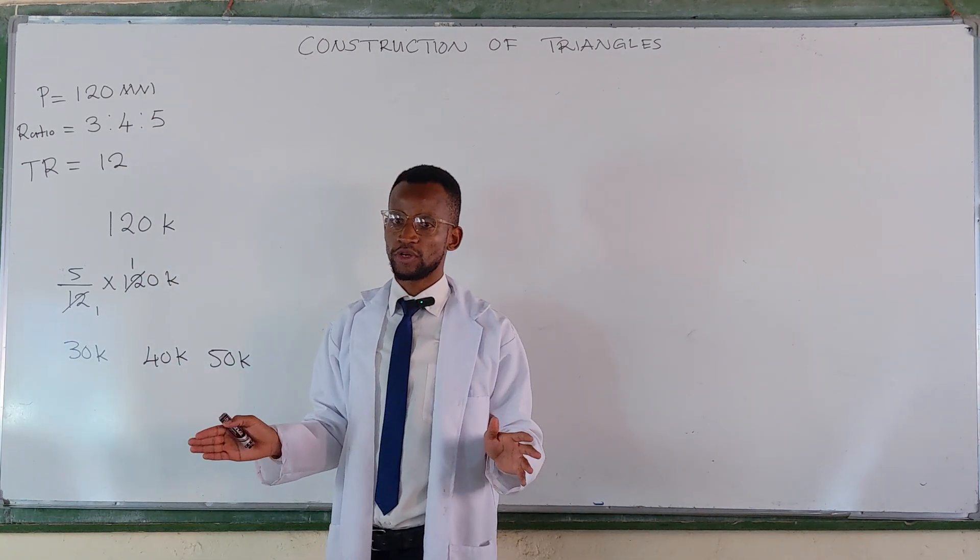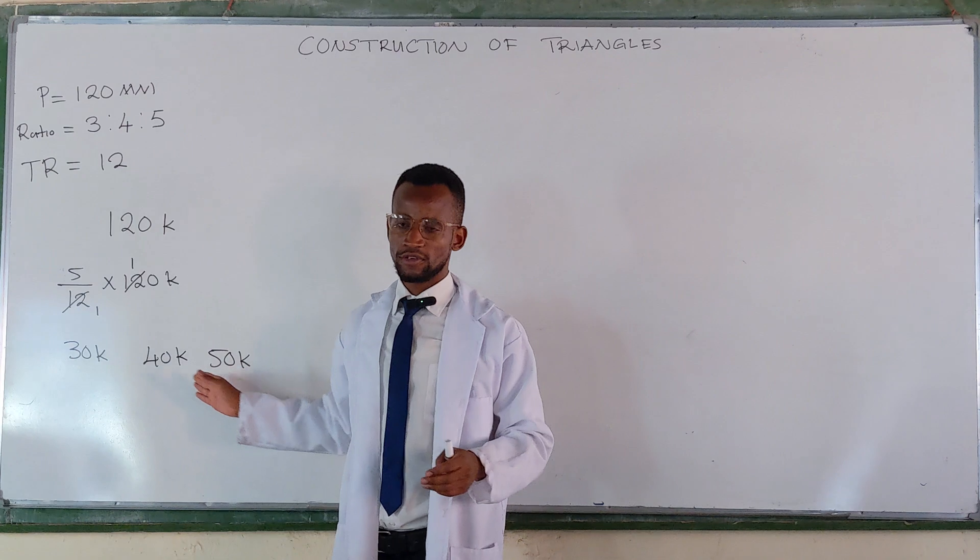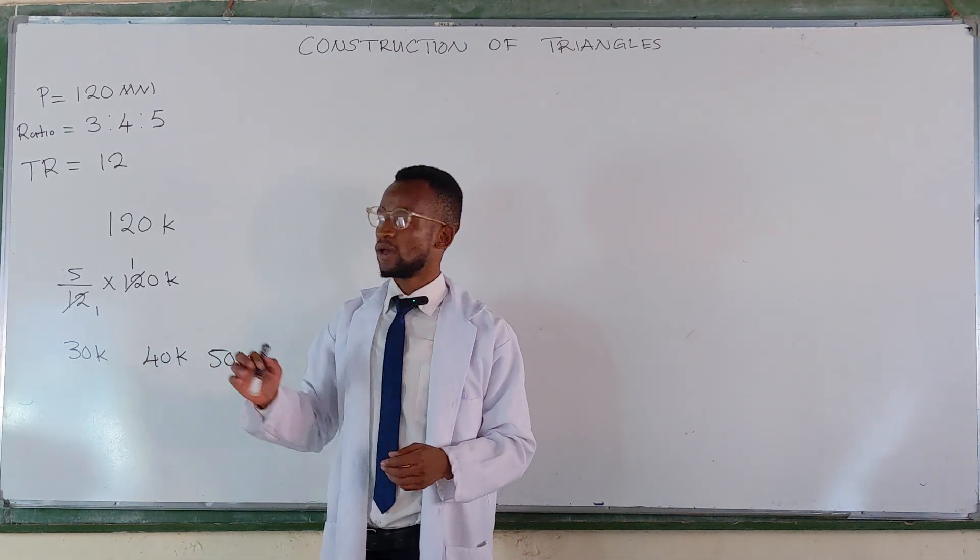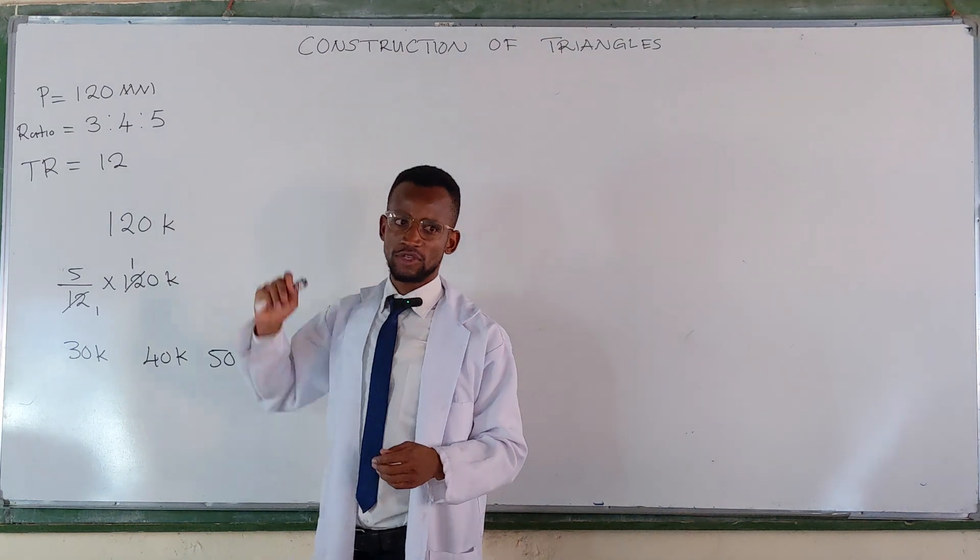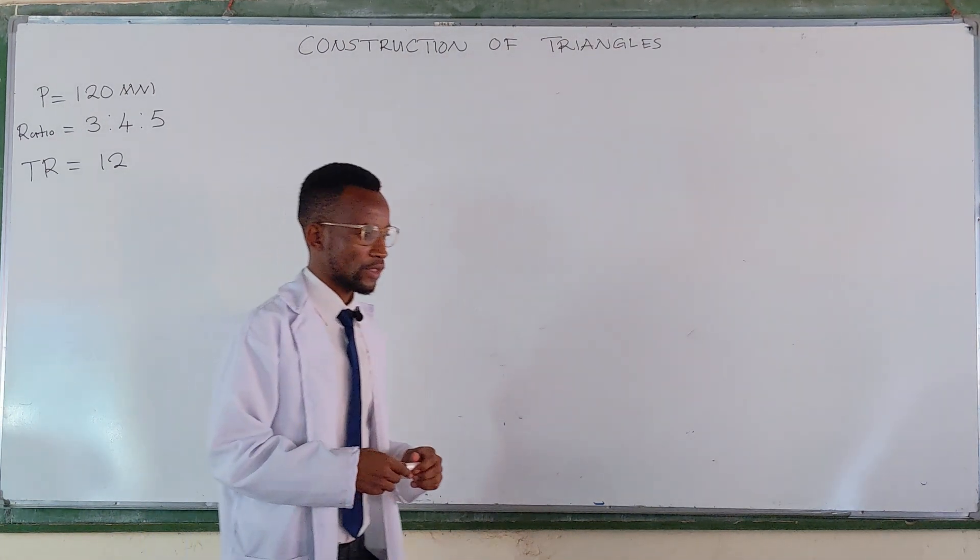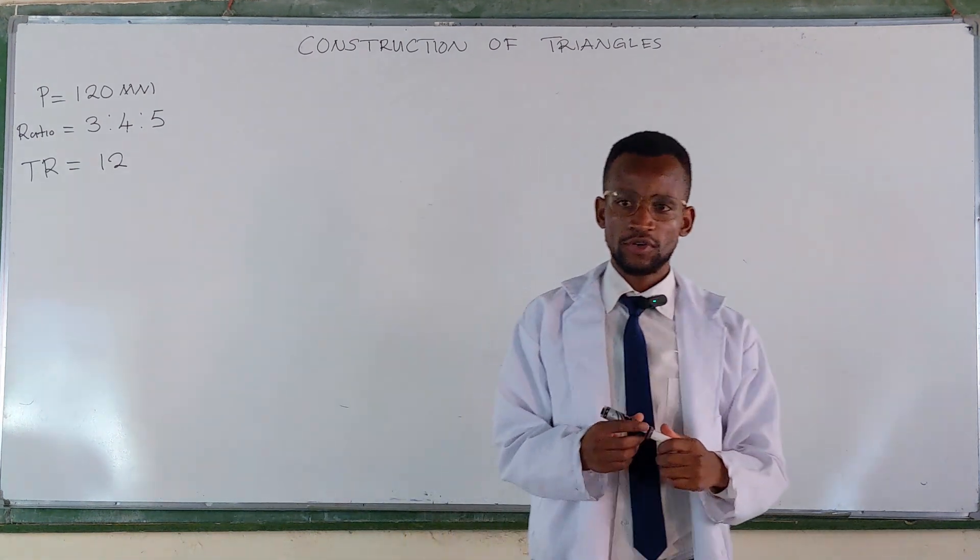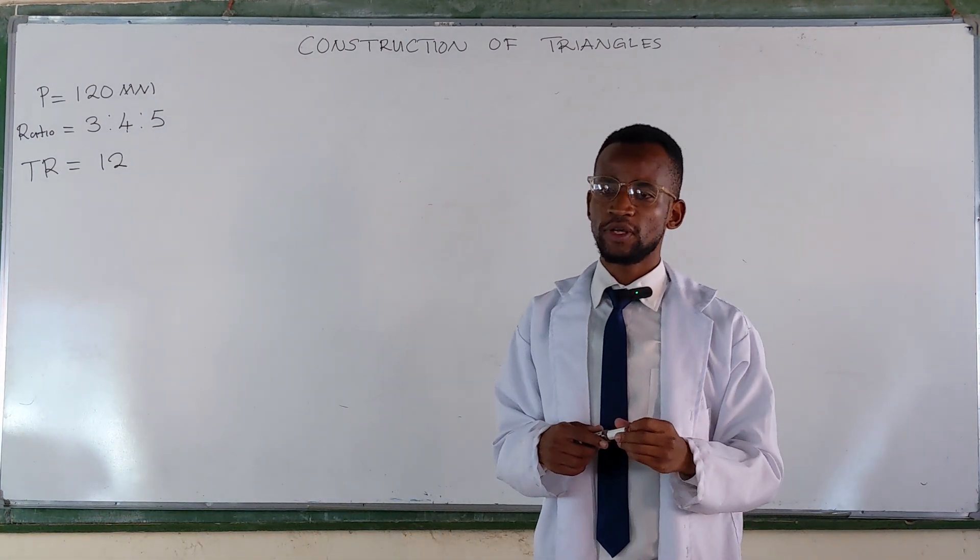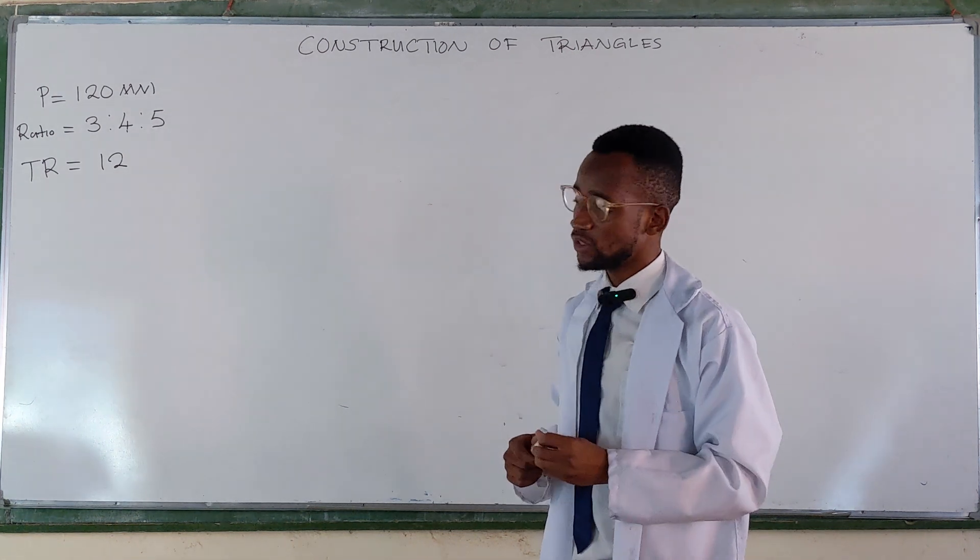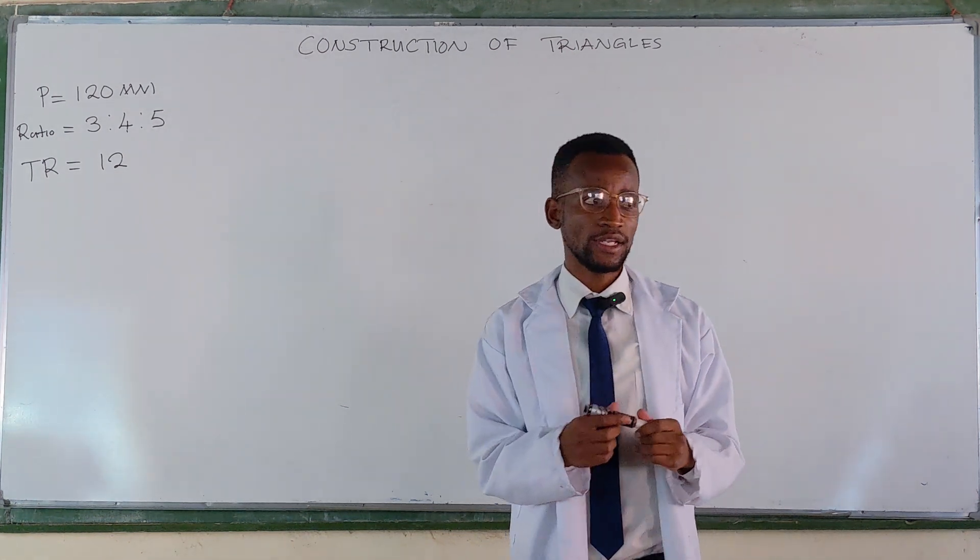So this is the same principle here. Only that here we're using the analytical method where we are doing calculations. But we want to show this using the graphical method. And then we draw a line that is equal to the perimeter in length. So we draw a line that is equal to 120 millimeters and call that line, line DE.